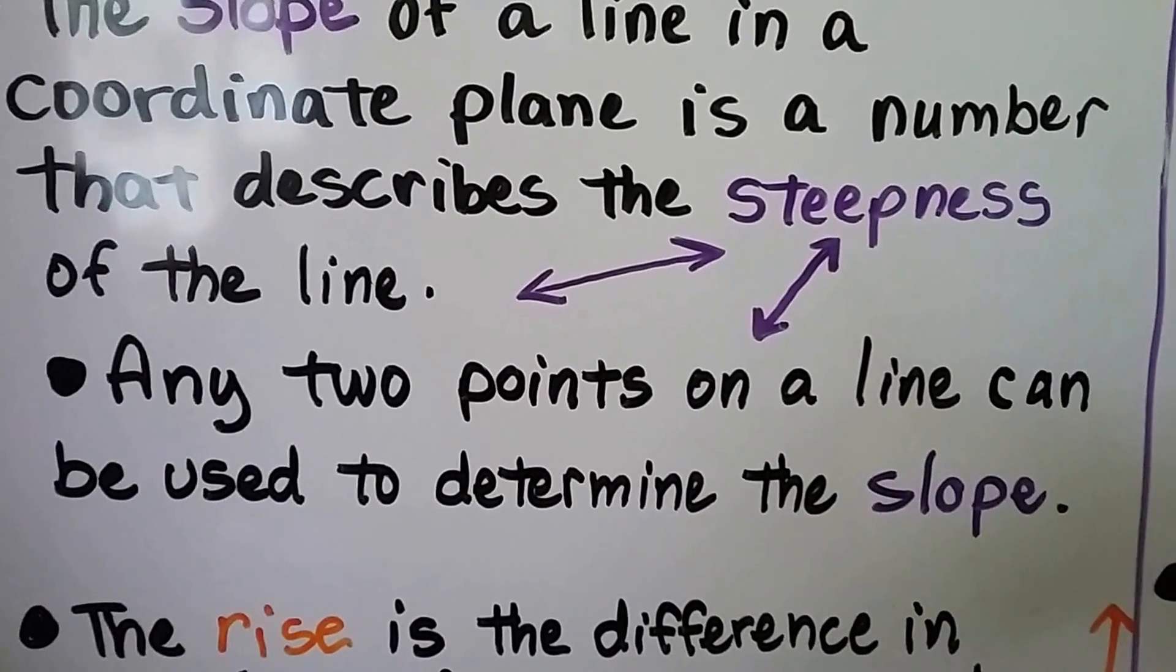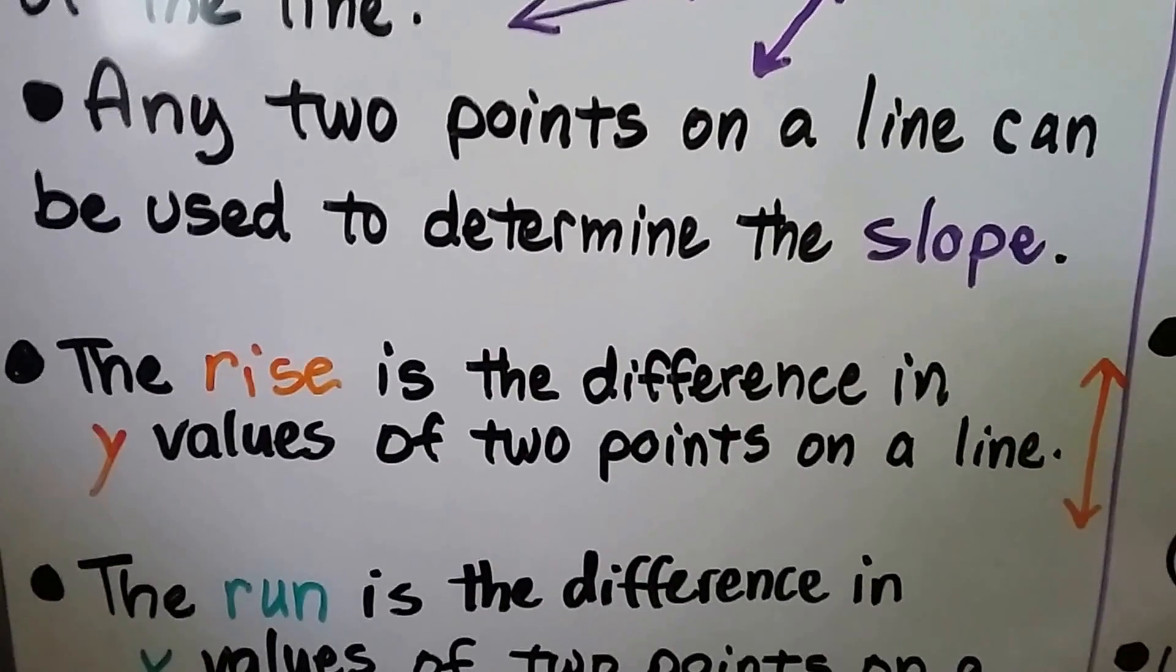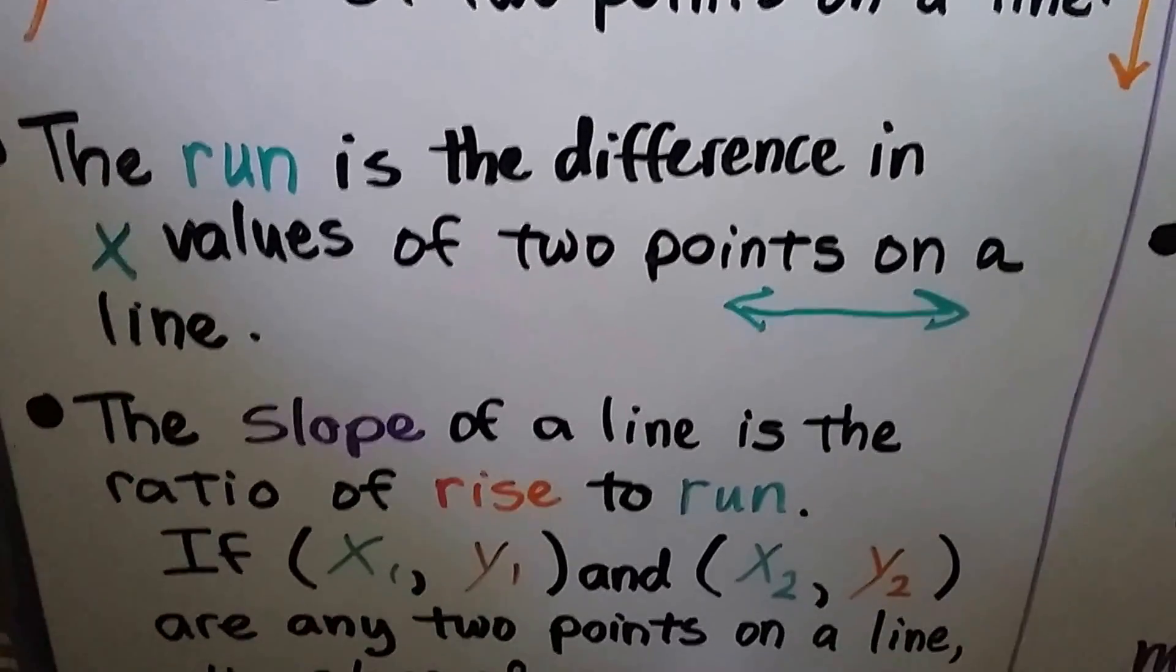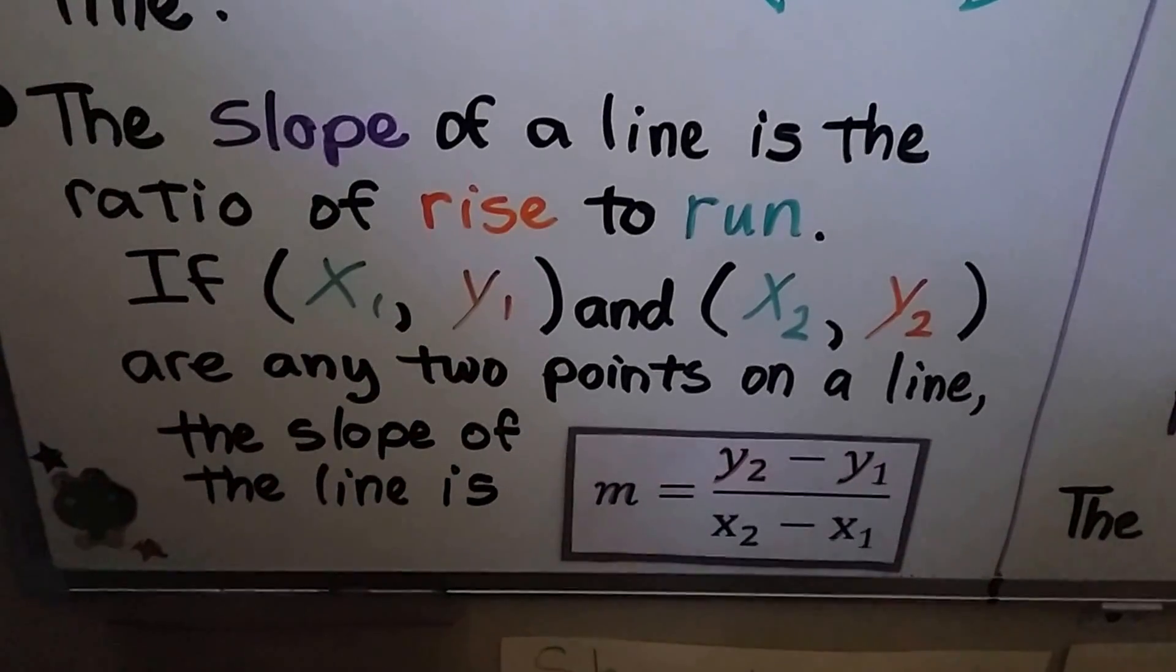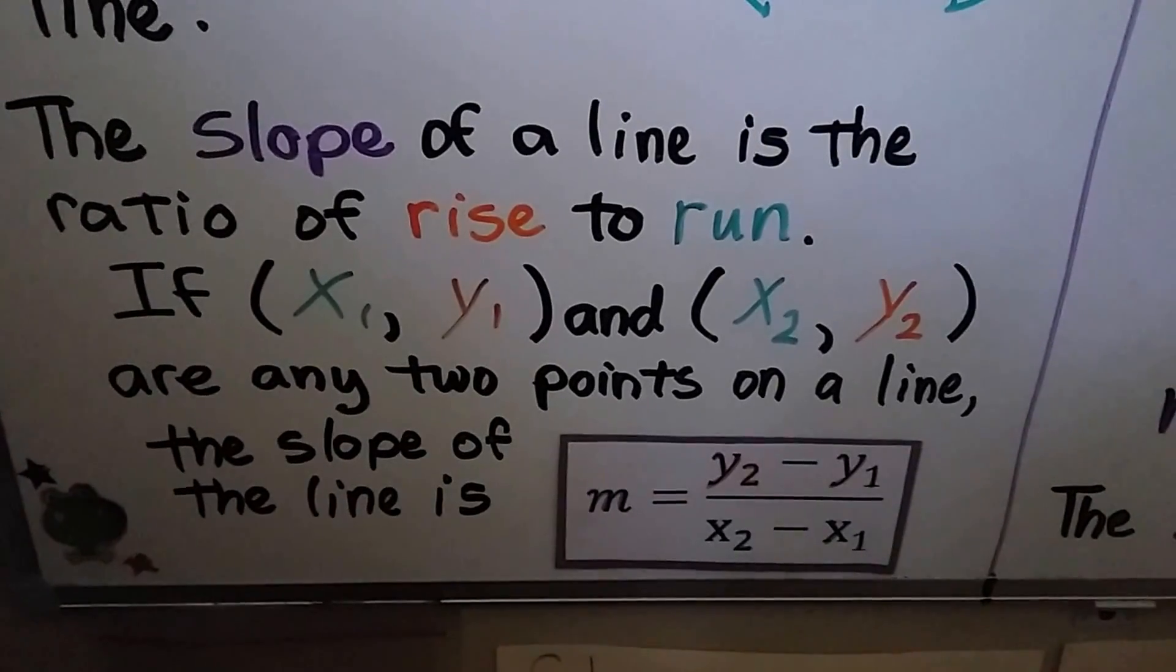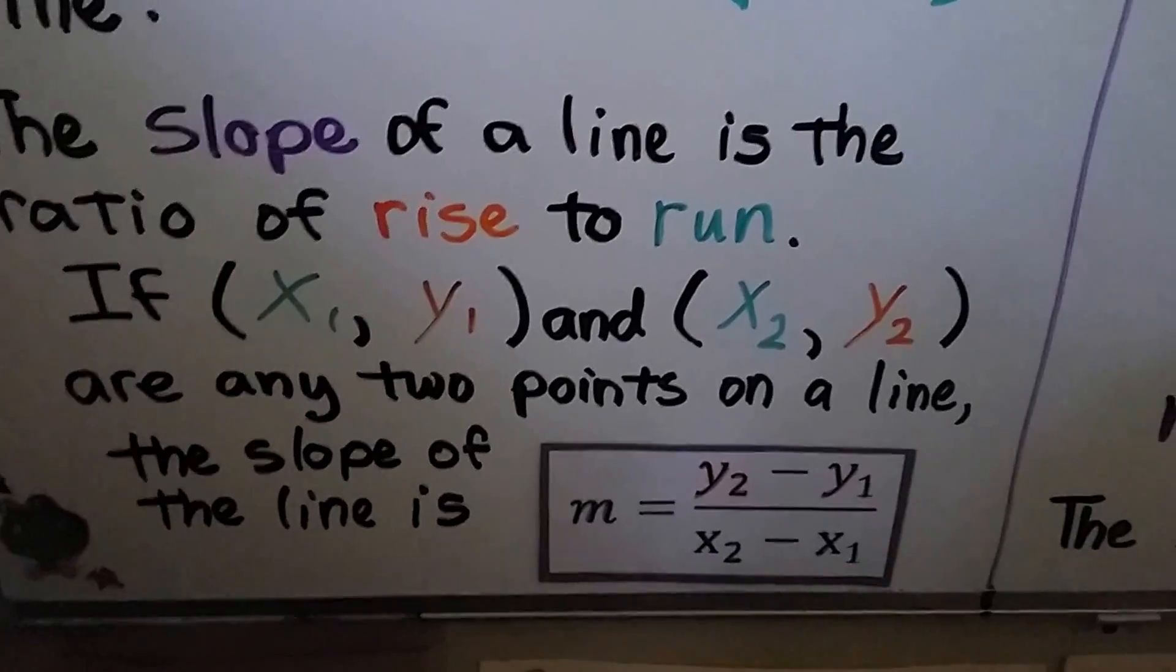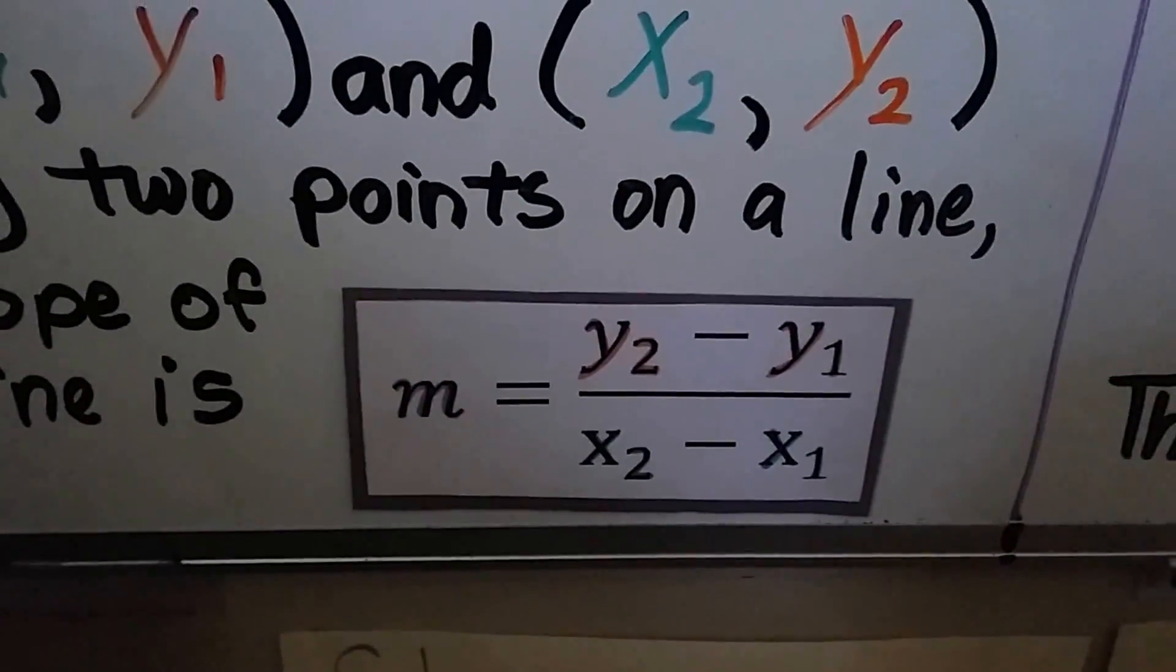Any two points on a line can be used to determine the slope. The rise is the difference in y values of two points on a line. The run is the difference in x values of two points on a line. The slope of a line is the ratio of rise to run. So take a look inside the parentheses here. We've got if x sub 1 and y sub 1, that would be one point, and x sub 2, y sub 2, that would be another point, are any two points on a line. The slope of a line is found with this formula. That's what we're going to be working with. It's the slope formula.